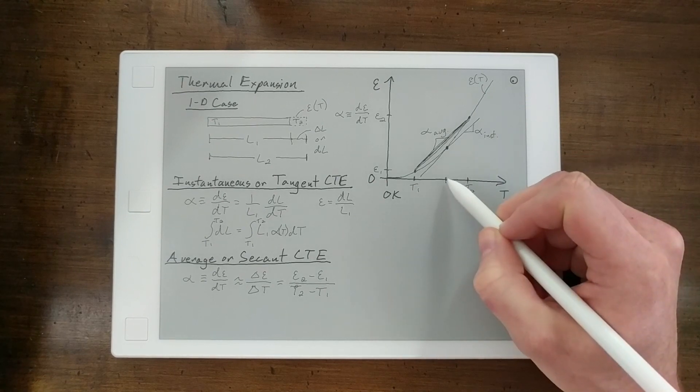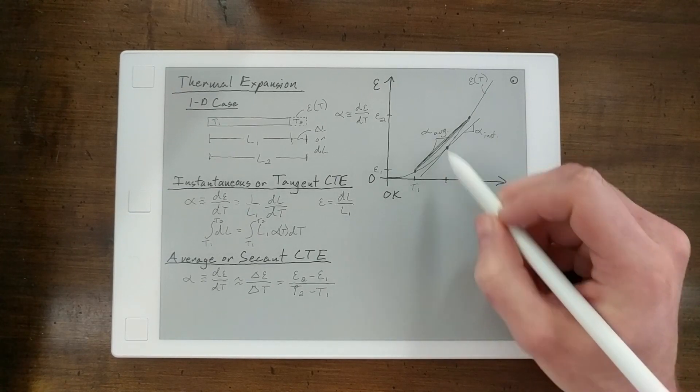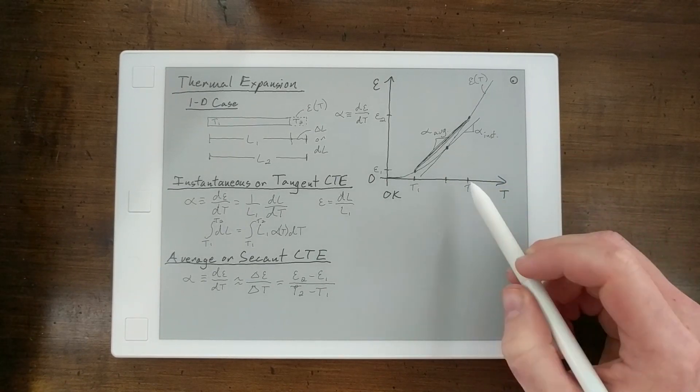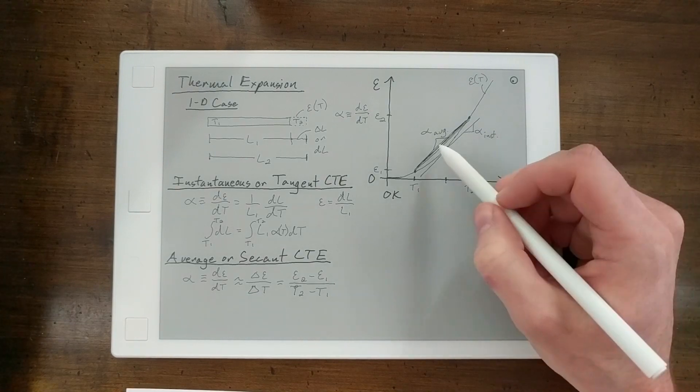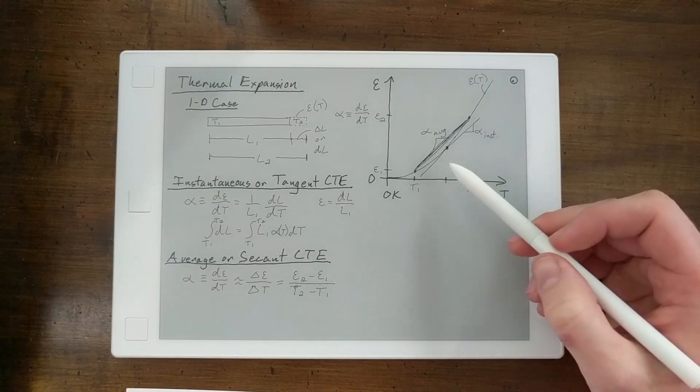Notice, the instantaneous CTE was at a single temperature, and the average CTE is across two temperatures. So, you're just looking at the slope of that line.